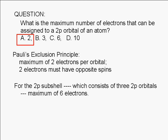If you thought the answer was 6, you may be thinking of the 2p subshell. A 2p subshell consists of three 2p orbitals. Since each orbital can be assigned to two electrons, the 2p subshell can be assigned to six electrons. 3 times 2 equals 6.